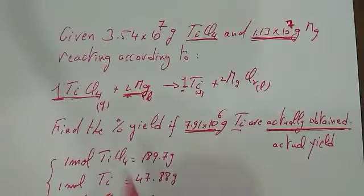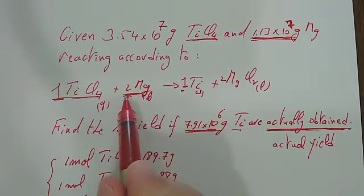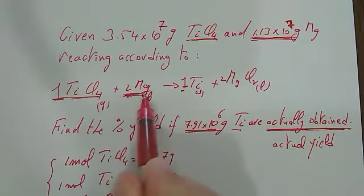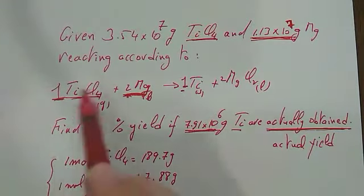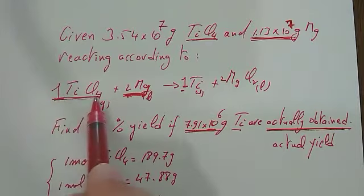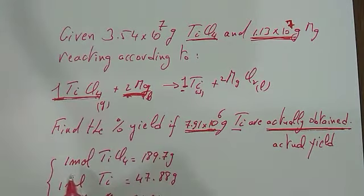Now I know how much TiCl4 I have. The problem is I also have Mg, so I need to know which one is in excess. But I know from the equation that every time 1 TiCl4 reacts, 2 Mg should be converted.